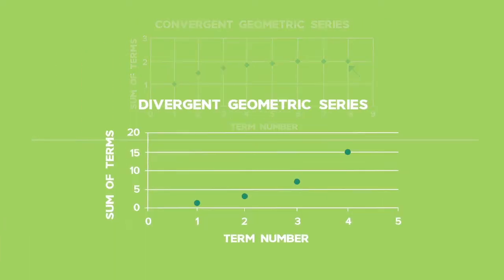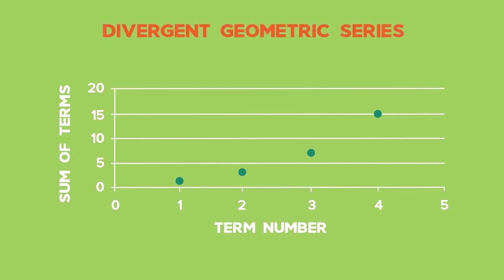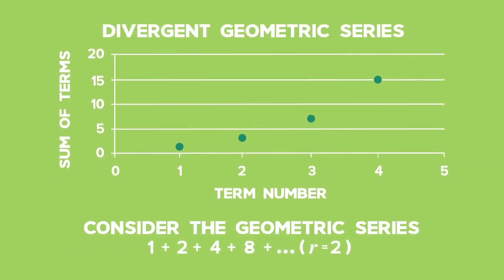In the second graph, the terms of a divergent geometric series are plotted. The ratio of this geometric series is 2, which is larger than 1. In this case, the terms continue to increase in size, and the infinite series diverges — we cannot calculate the sum of the series as a finite real number.